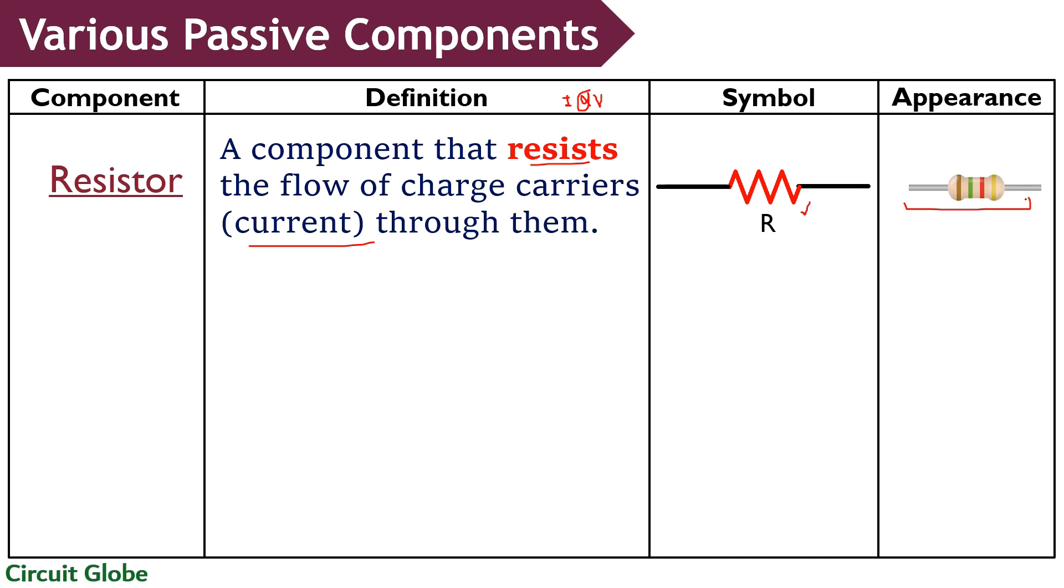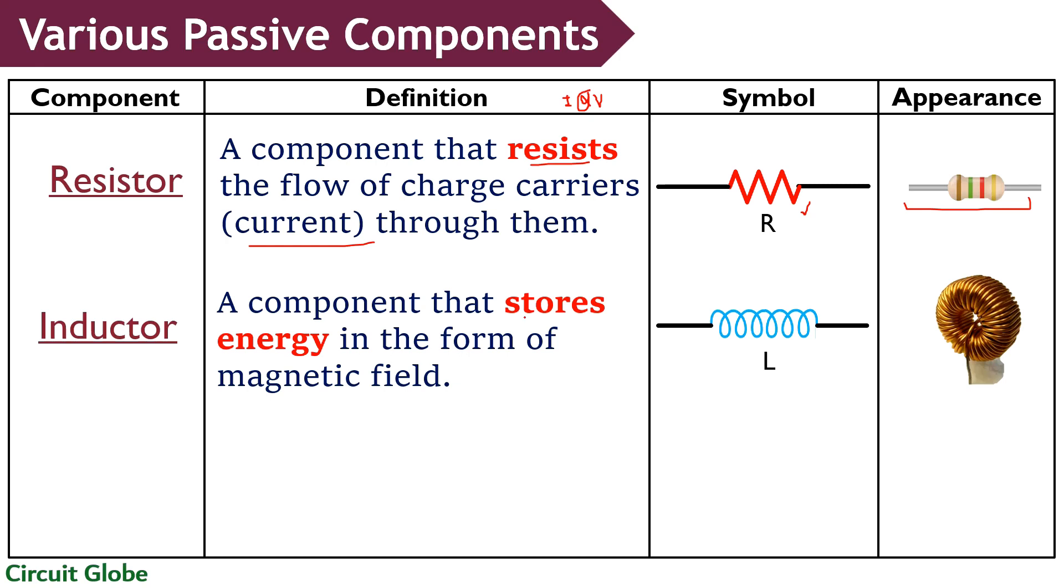Our next component is inductor. Inductor is a component that stores energy in the form of magnetic field within it. It is a two-terminal component within which the generated magnetic flux due to magnetic field resists changing current. It is symbolically represented as this and is formed by wounding copper wire over a plastic or ferromagnetic material. It can be air core inductor, ferromagnetic core inductor or variable inductor.